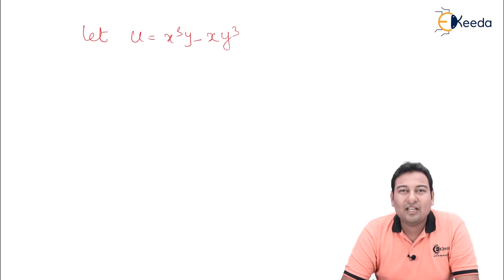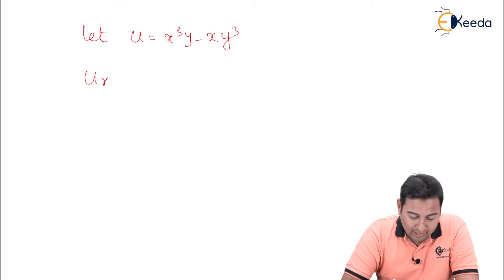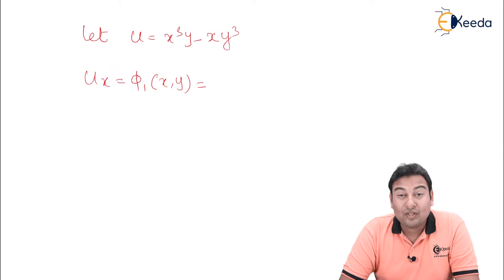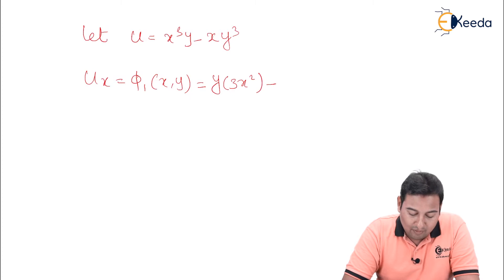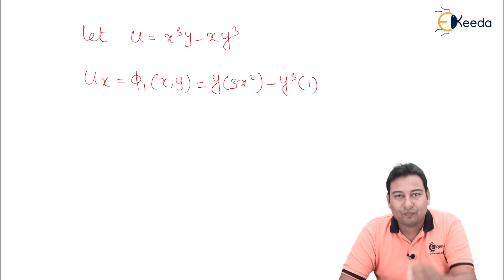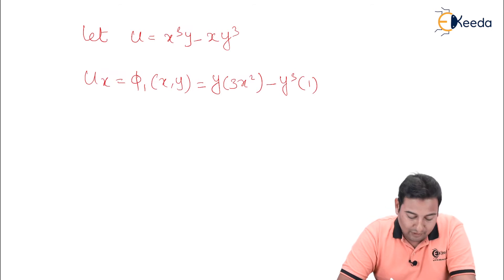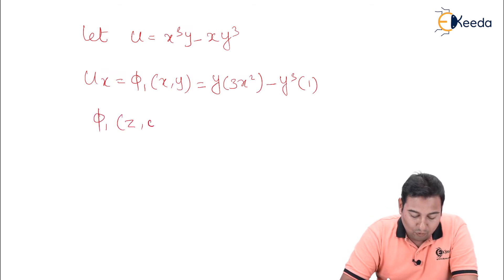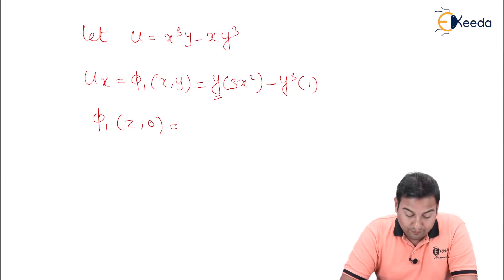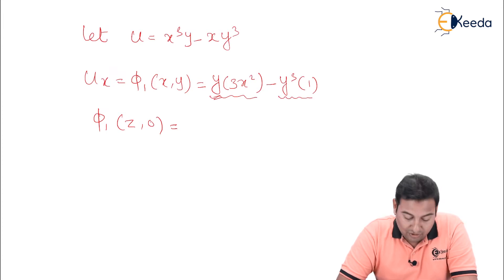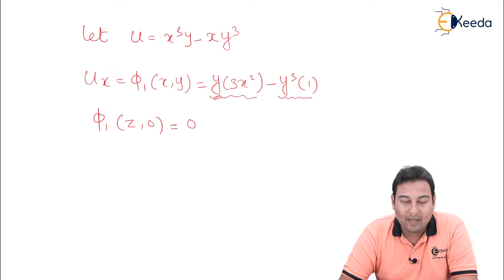The first thing we need to find is u_x, and we name it as phi 1 of x, y. Differentiating with respect to x, y is constant: x cube derivative is 3x square, minus y cube constant, x derivative is 1. Now evaluating phi 1 at (z, 0): placing y as 0, the entire term becomes 0, so phi 1(z, 0) is 0.